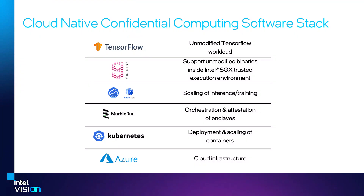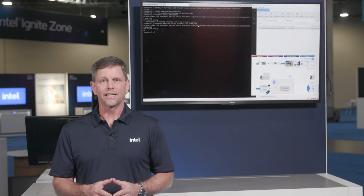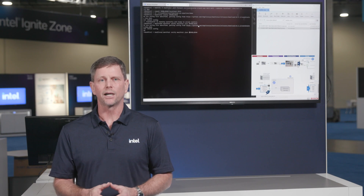To do this neural network training, Bosch utilized a cloud-native confidential computing software stack that includes TensorFlow utilizing Gramine Library OS running inside an SGX Trusted Execution Environment, KServe and Kubeflow, Edgeless Systems Marble Run, and Kubernetes — all running on an Azure Confidential Computing Node. Using this stack allowed a fast, scalable training pipeline to easily be deployed for the collection and secure processing of ADAS data.